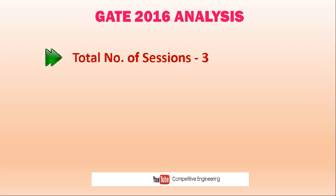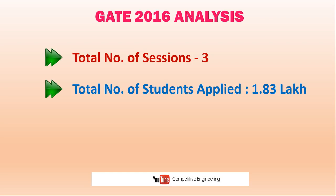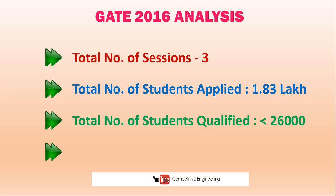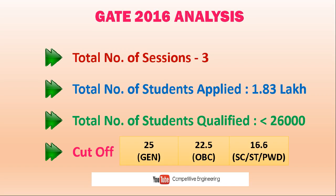The total number of sessions was 3, for Electronics and Communication Engineering. Total number of students applied was around 1.83 lakh and total number of students qualified is less than 26,000. This means that nearly 1.5 lakh people disqualified. The cutoff is very high — for general it is 25, OBC 22.5, and for SC/ST and physically challenged it is 16.6.